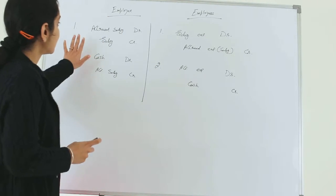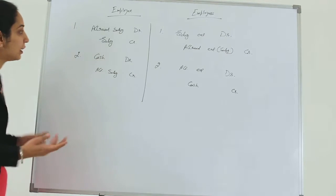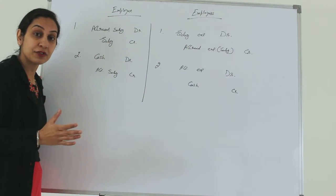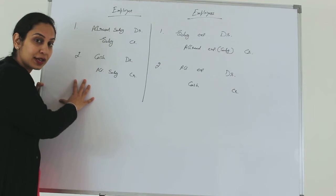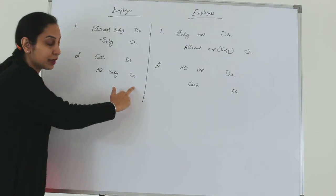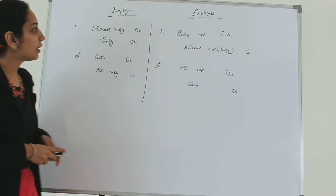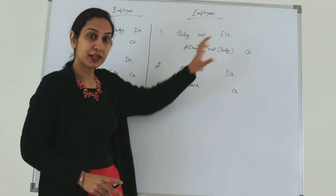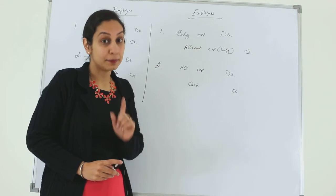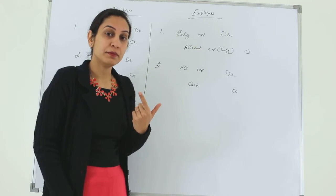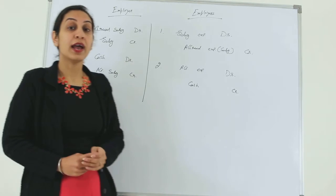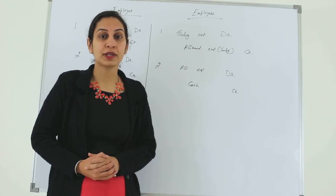Quick recap. Salary due but not received — for the employee: entry is Accrued Salary Account debit, Salary Account credit. Salary is an income for the employee, and accrued salary is a current asset. The moment you receive the salary, cash will be debited because we debit what comes in, and accrued salary — which was a current asset — will be credited to remove it from the books. The counter entry in the books of the employer: Salary Expense is debited because for the employer salary is an expense, and accrued expense is credited because for them it is a current liability. When the employer makes payment: accrued expense is debited and cash account is credited. This is how we make entries for accrued incomes and expenses. By now you should be clear about the concept of accruals.